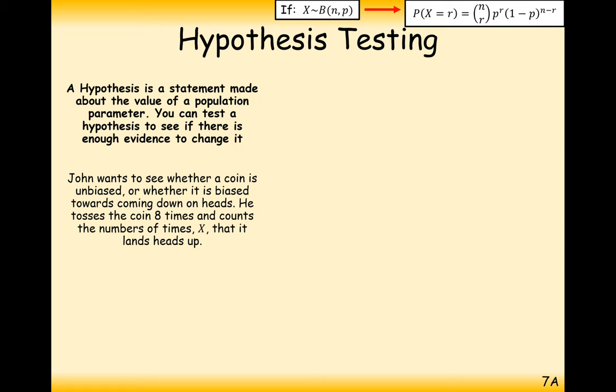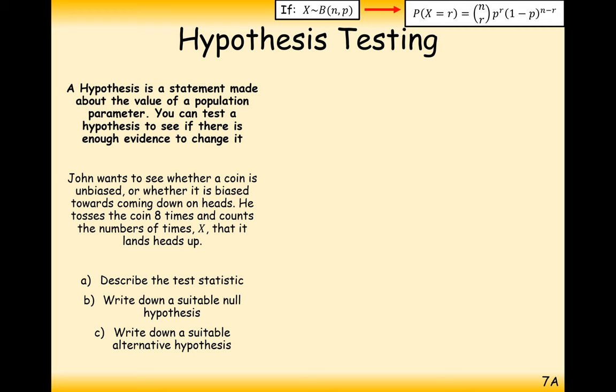So let's have a look at another situation here. John wants to see whether a coin is unbiased or whether it is biased towards coming down on heads. He tosses the coin 8 times and counts the number of times x that it lands heads up. Describe the test statistic, the null hypothesis, and the suitable alternative hypothesis.